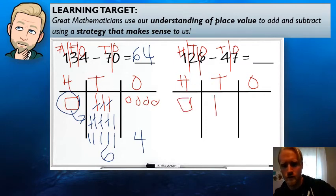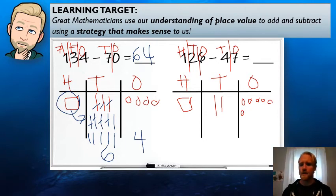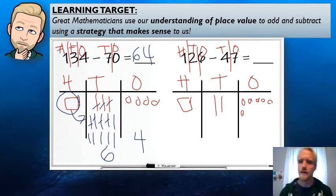All right. And we're going to start always by representing the larger number. One hundred, two tens, and one, two, three, four, five, six. All right. So now we're going to take away 47. We always start in the ones place. Great. Good job. All right. So six take away seven. Well, seven's one more than six.